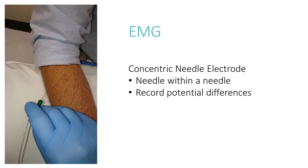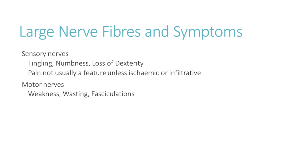For EMG, we use a very fine concentric needle electrode — a needle within a needle — recording the potential difference between the central core and the outer metallic sheath. We are recording the potential differences of the muscles as they contract, generating small electrical fields, giving us an electrical representation of how the muscle fibers are contracting.